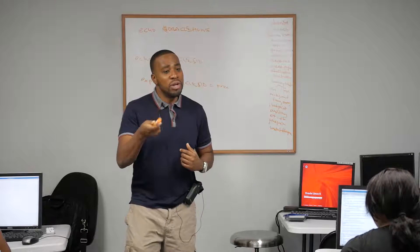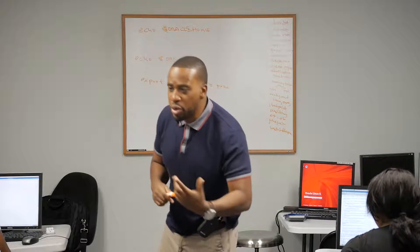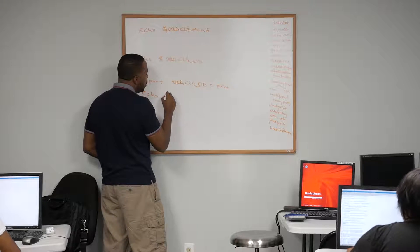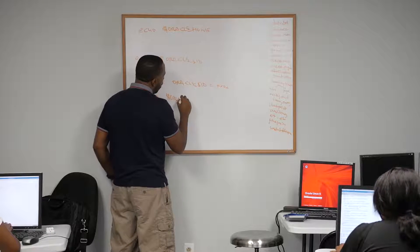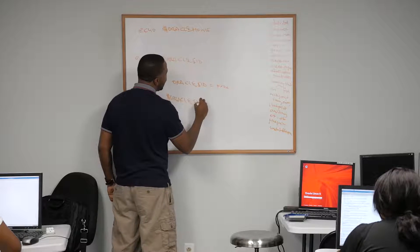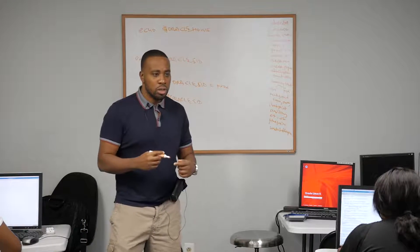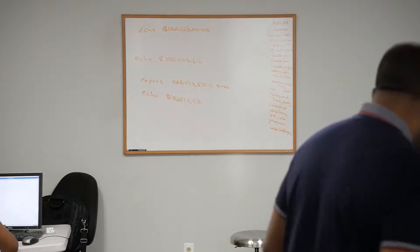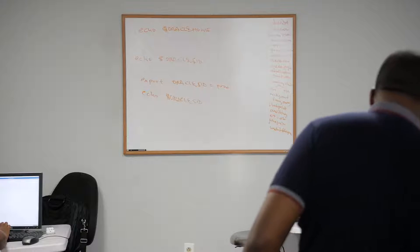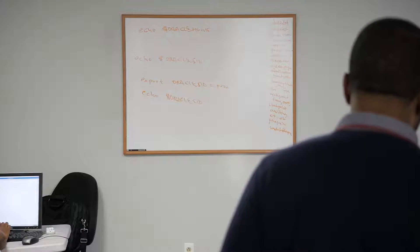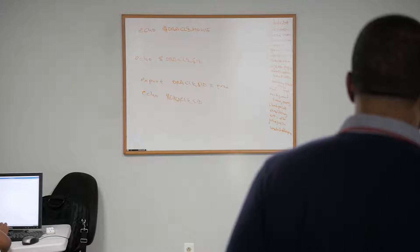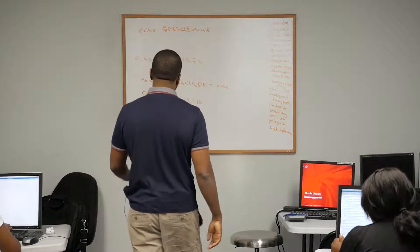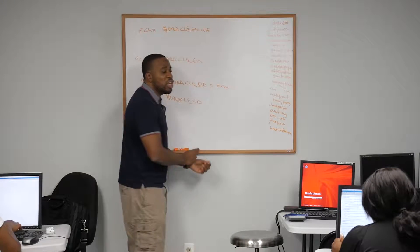Let us verify right before we connect. We do echo dollar ORACLE_SID. All caps. Everybody should see 'prod'. When you export and then echo, whatever you threw out comes back to you. Do echo space dollar ORACLE_SID — everybody should see prod.